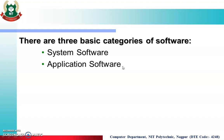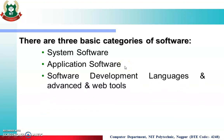For example, some students have JET Audio installed in their system, while some have Windows Media Player installed for listening to songs. These are the user's choices — as per the requirement, everyone can install different software. These fall under application software. The third category is software development languages and advanced web tools.